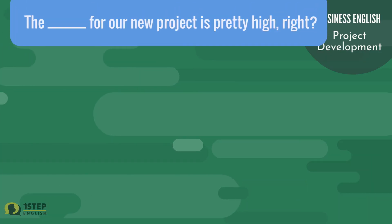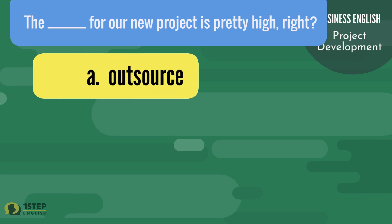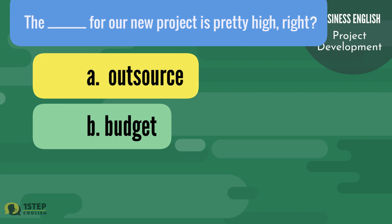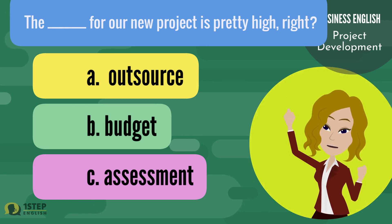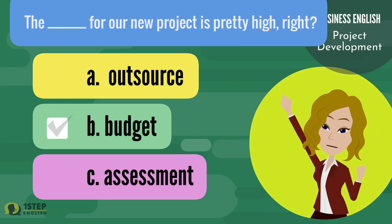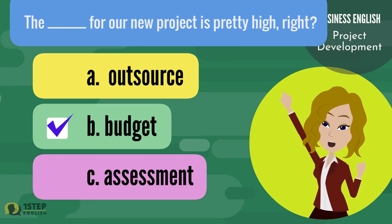'The ___ for our new project is pretty high, right?' Letter A: outsource. Letter B: budget. Letter C: assessment. The correct answer is letter B, budget. 'The budget for our new project is pretty high, right?'